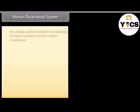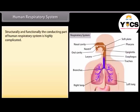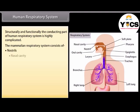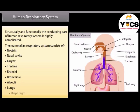The conducting part of the human respiratory system is structurally and functionally highly complicated. The mammalian respiratory system consists of nostrils, nasal cavity, larynx, trachea, bronchi, bronchioles, alveoli, lungs, and diaphragm.